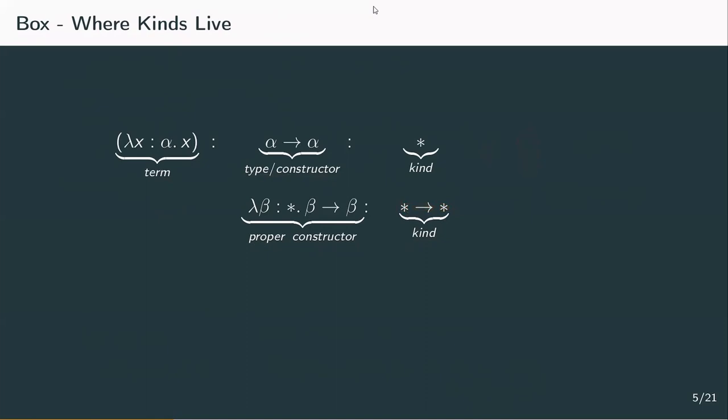But where do these kinds live? We'd like to give those kinds a type as well. We make things simple by giving them all the same type, which we denote by this box symbol. So every kind is a box. These boxes will be needed to perform derivations later. This isn't so different from how we treated types in the simply typed lambda calculus, where we said all types are of kind star. This time, all kinds are box.